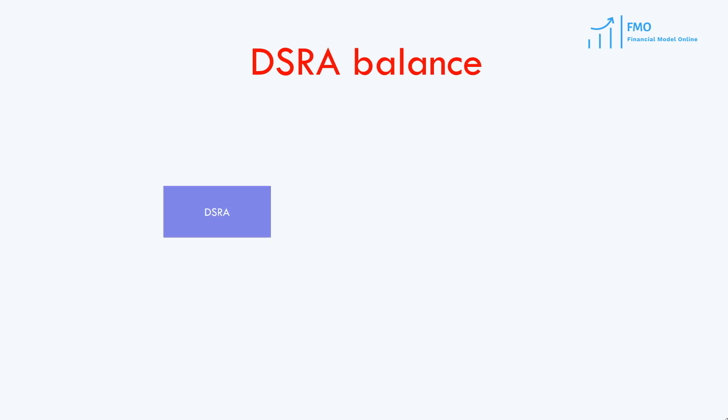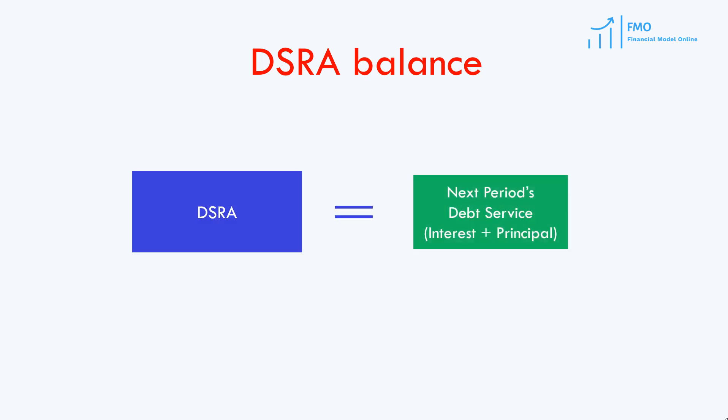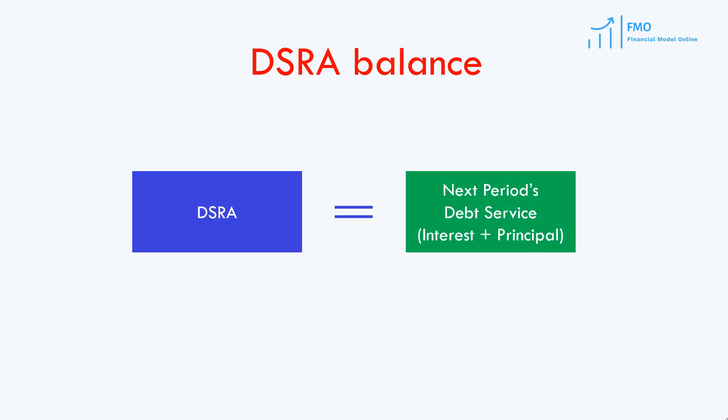The typical required balance on the Debt Service Reserve Account is an amount equal to the aggregate of the anticipated principal repayments and interest payments over the next six months.